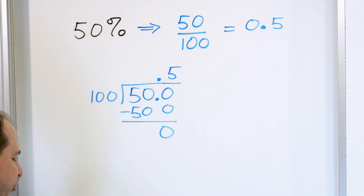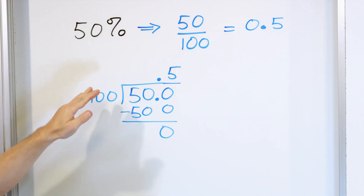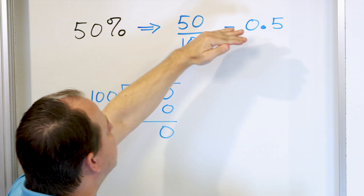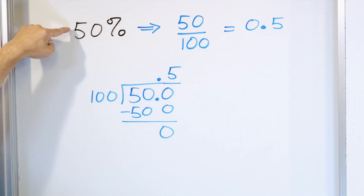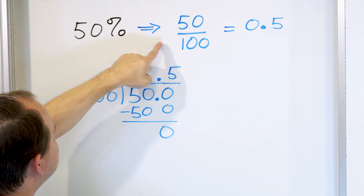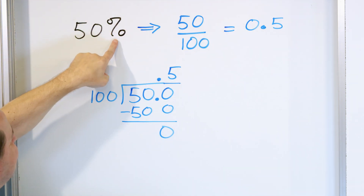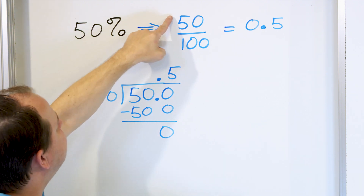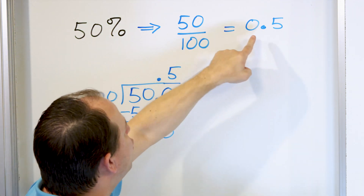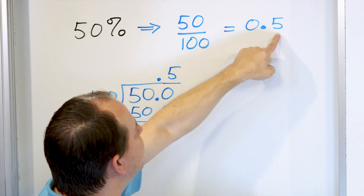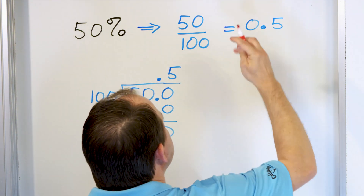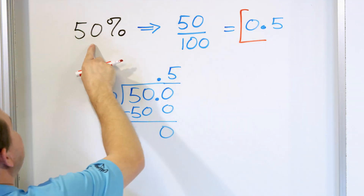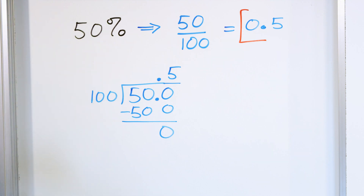There are different ways to represent percentages — every percent can be converted to a decimal. The way you convert it is to take the 50 and divide it by 100, because that's what percent means. When we do this division, we find that the decimal equivalent is 0.5. So 0.5 is another way of writing 50 percent.